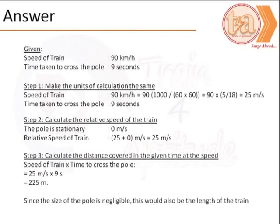To cross the pole, it is mentioned that the train takes 9 seconds. The total distance that the train would have covered in this exercise is that of its length itself. That is nothing but the speed of the train into the time taken which is 225 meters.